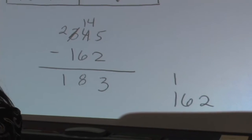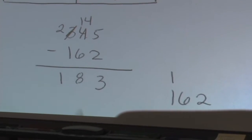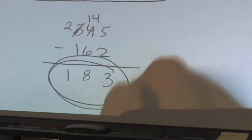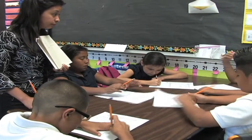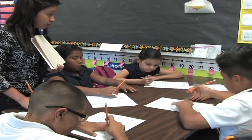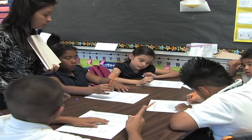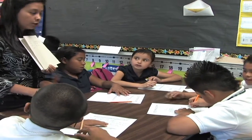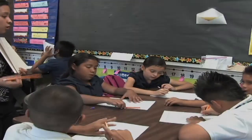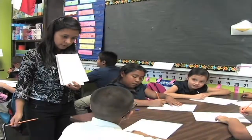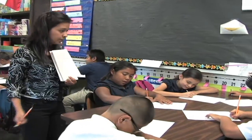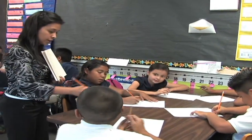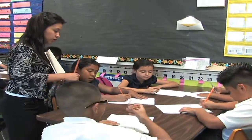So what's the answer? 183. Circle your answer. What does the next problem ask you? How much is there in all? How are you going to find how much there is in all? Four plus two. Four plus two. Circle your answer.